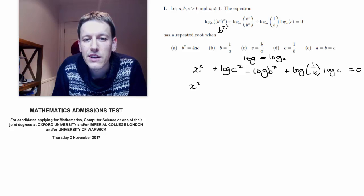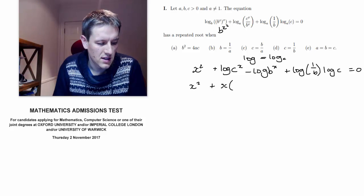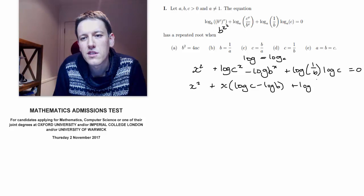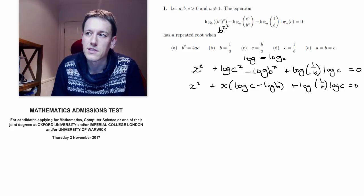So I've got x squared. Now here the rules of logs say that this is just x log c and this one's x log b, so I've got x times log c minus log b, and then I've still got this term over here that I can't do anything with, but I have got a quadratic equation in x now.